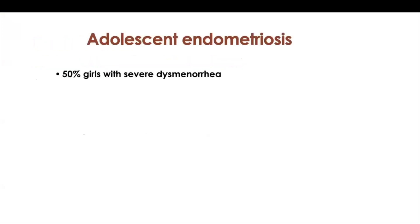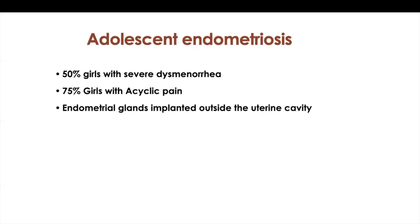Adolescent endometriosis occurs in about 50% of girls with severe dysmenorrhea and 75% of girls who have chronic pelvic pain. If somebody has pelvic pain, you should get alarmed — this could be endometriosis. What is endometriosis? It is endometrial glands implanted outside the uterine cavity. With period pains, the endometrium is shed. But if this endometrium is implanted in the pelvic cavity, there is no place for that shedding. Every month with the shedding, it causes scarring, fibrosis, and distortion of the pelvic cavity, compromising the reproductive potential.